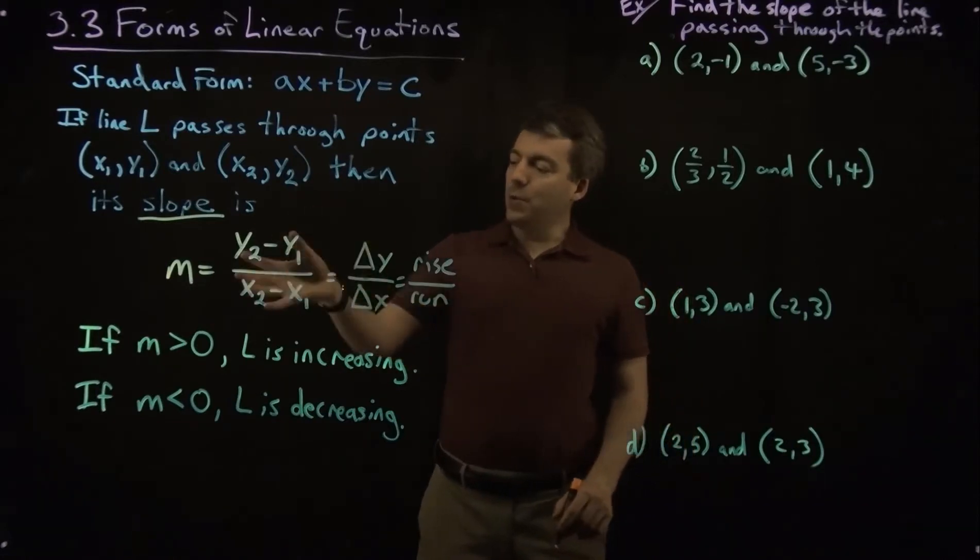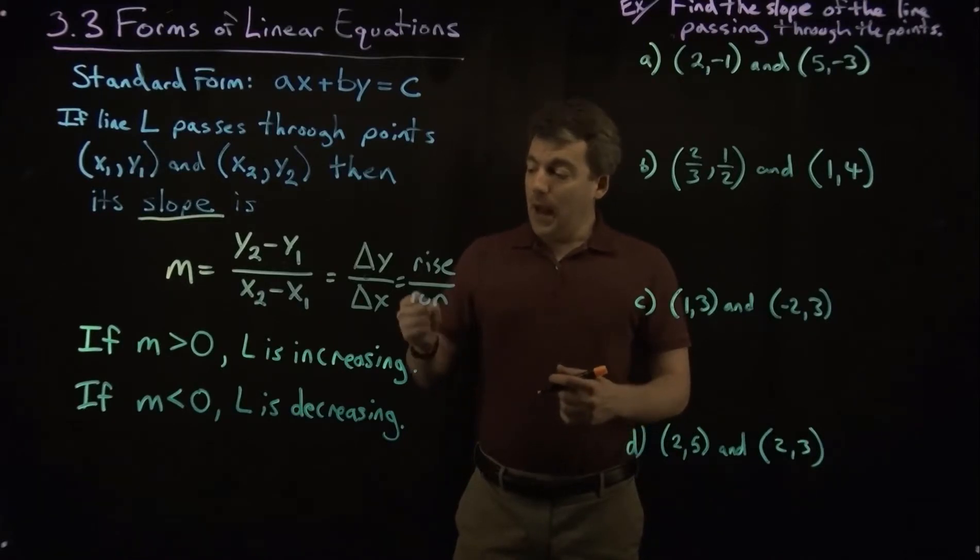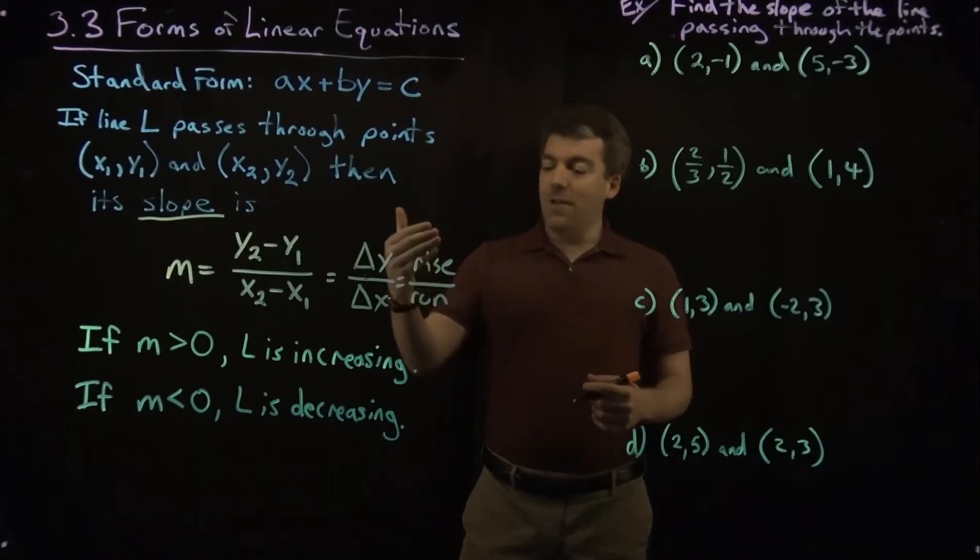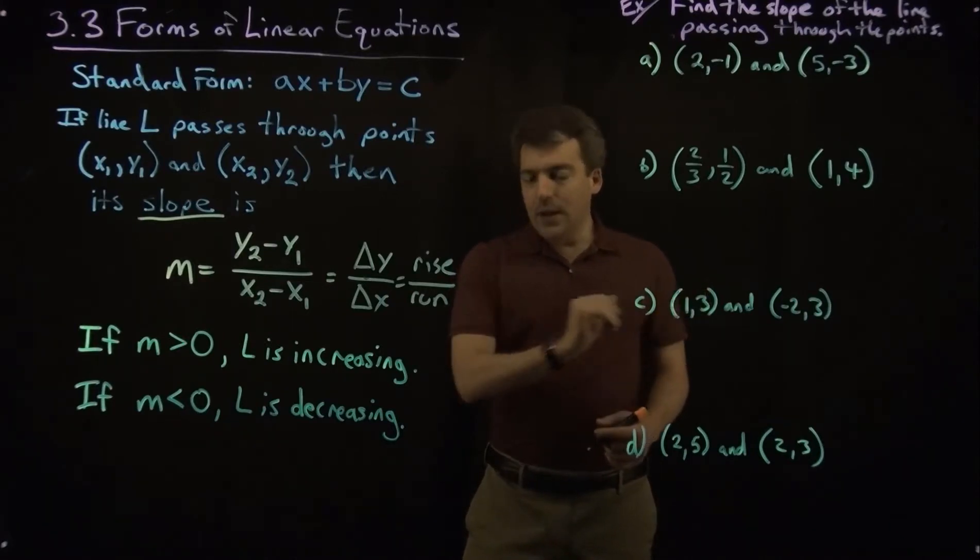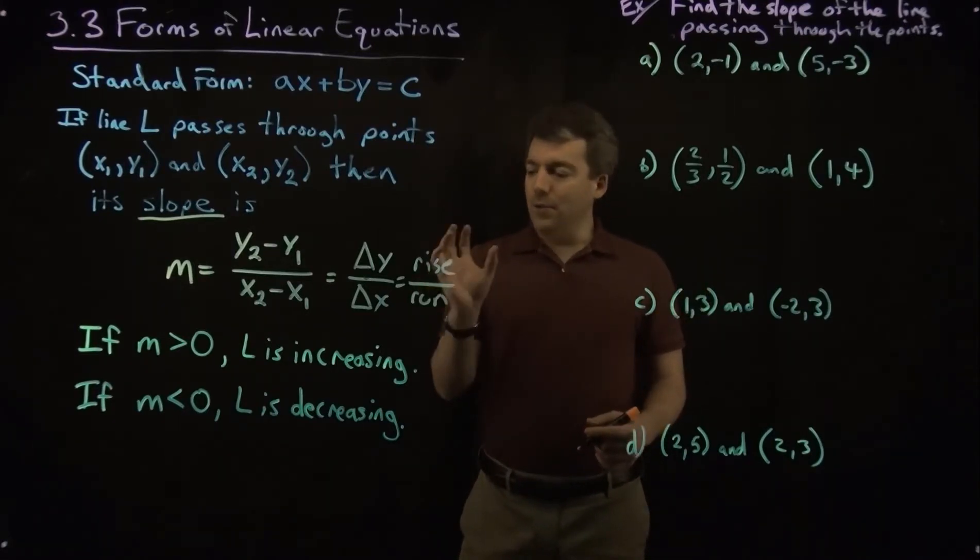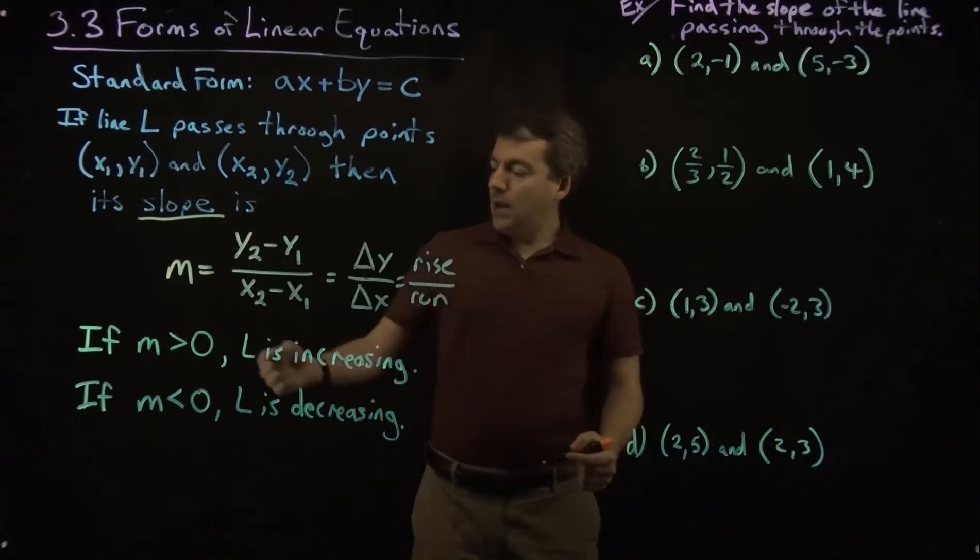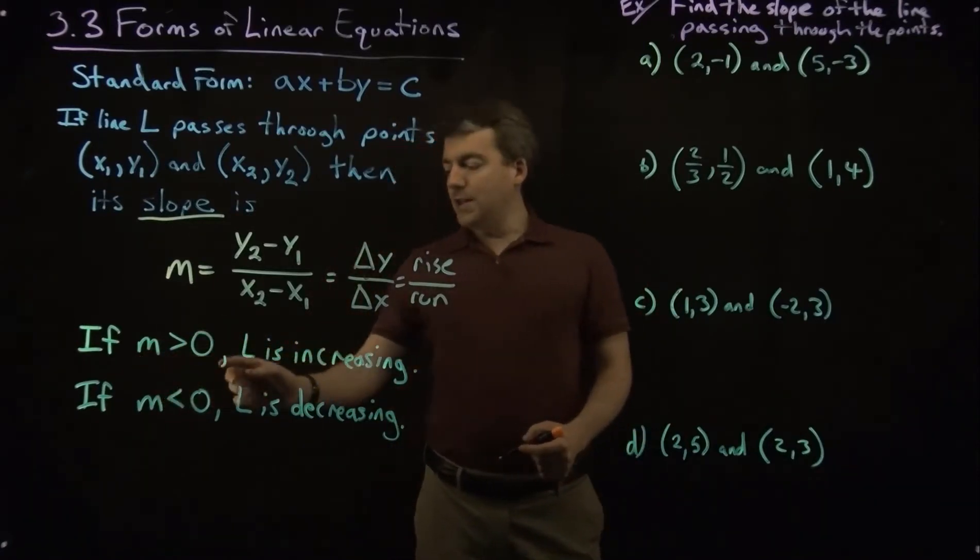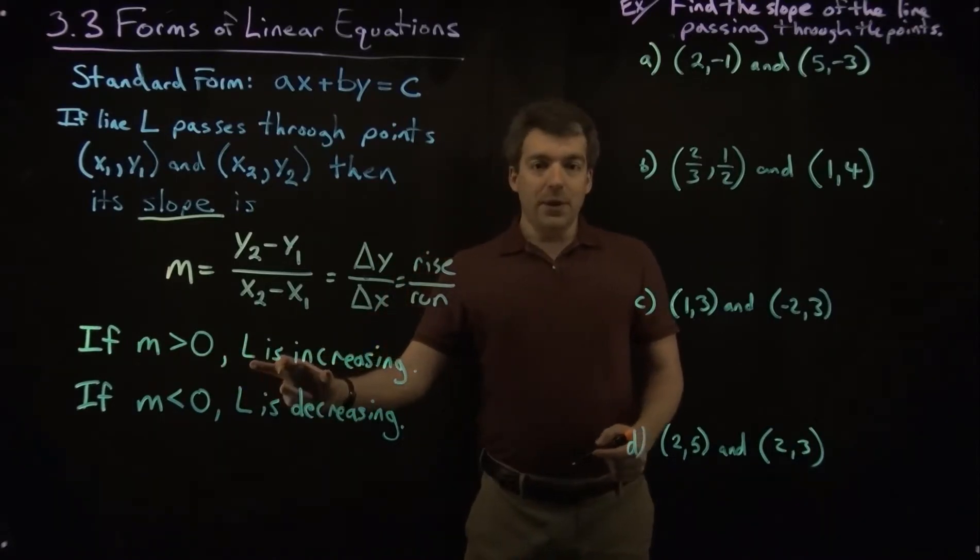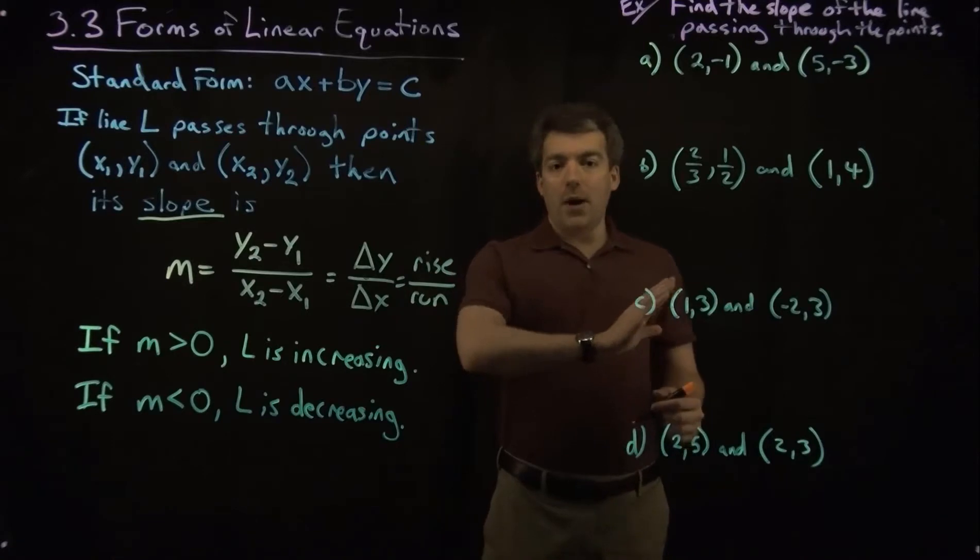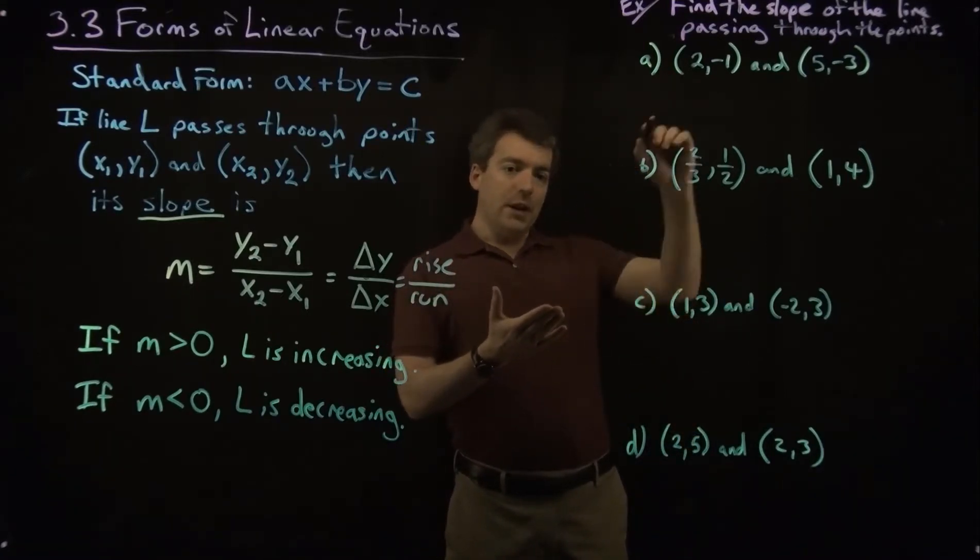So given two points that are on a line, we can then find the slope. And that tells us some information. It tells us how fast the function is changing with respect to the x unit. So if we go one unit over in x, the slope tells us how much we go up or down. If the slope is positive, greater than zero, then the line will be increasing. As we move from left to right on the x-axis, the function will increase.